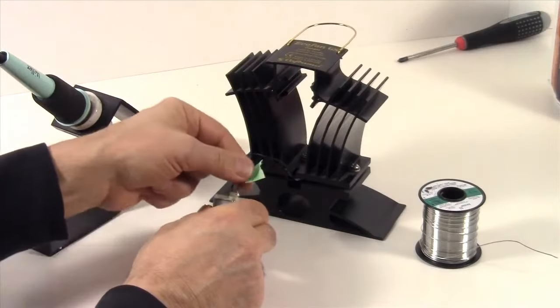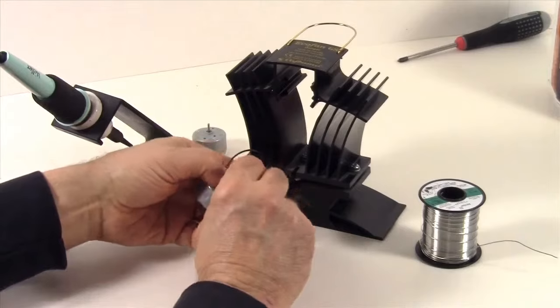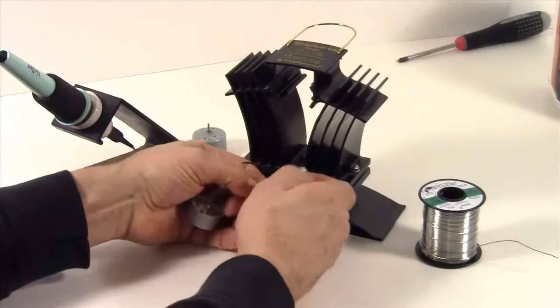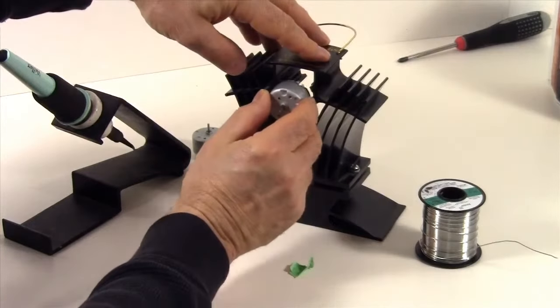Now we want to make sure that the wires are secure and then we simply remove the tape and reinsert the motor back into the eco-fan.